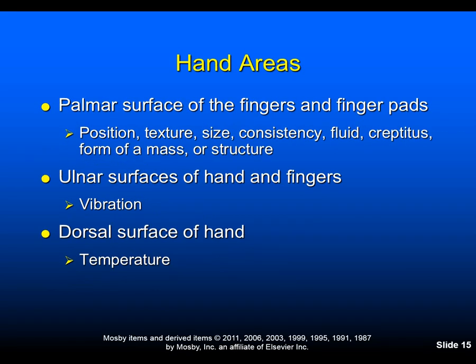The palmar surface of the fingers and finger pads are best used for assessing position, texture, size, consistency, fluid, crepitus, and the form of a mass or structure. The ulnar surface is for vibration and the dorsal surface is for temperature.